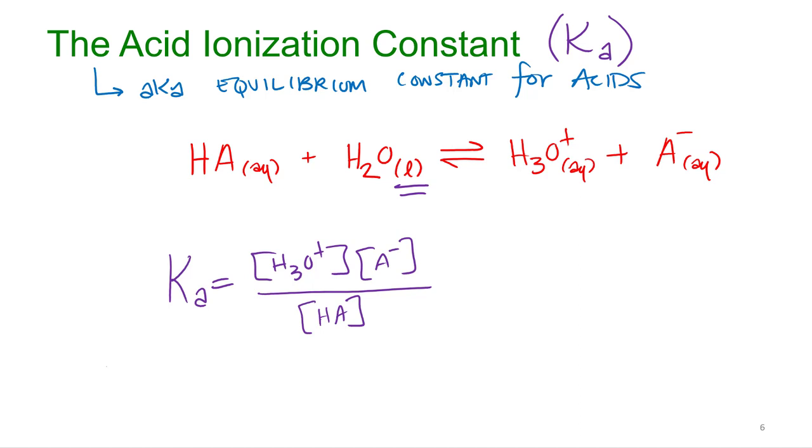The acid ionization constant, or the equilibrium constant for acids, the Ka. The Ka is the same thing we've been using previously. It's the concentration of the products over the reactants at equilibrium.